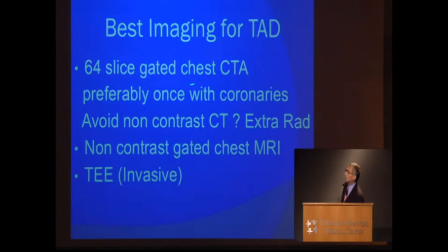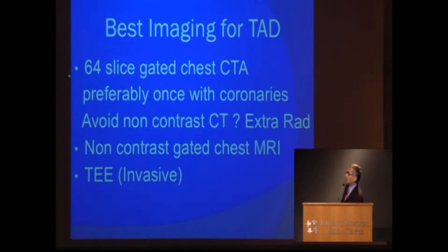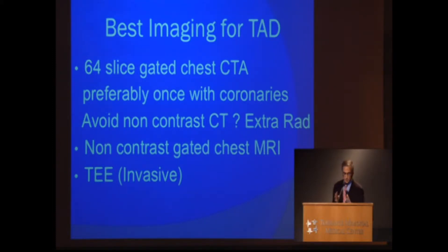Multiple CT scans are not advisable. However, if you get one, in my opinion it should be a gated CTA that includes the coronaries, because at some point these patients will experience chest pain. This would be a great way to confirm whether their coronaries are normal, and the gated chest CTA would be very helpful to identify the systolic diameter of the aorta. Since the aorta is pulsatile, it enlarges during systole, and we make our important decisions based on the largest diameter.